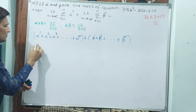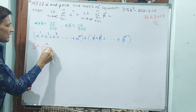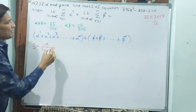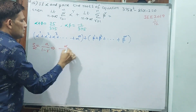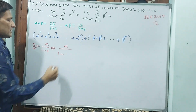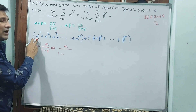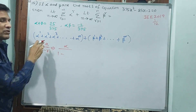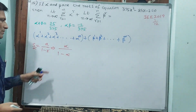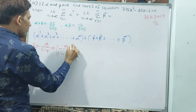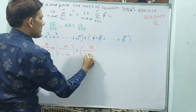The sum to infinity formula is S infinity equals a divided by 1 minus r. Here the first term a is alpha, and the common ratio r is also alpha — because alpha squared divided by alpha is alpha, alpha cubed divided by alpha squared is alpha. So the first part is alpha by 1 minus alpha.